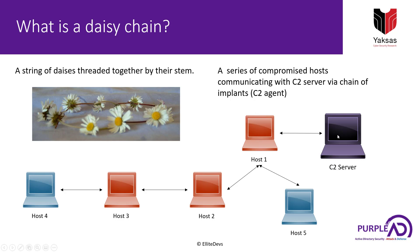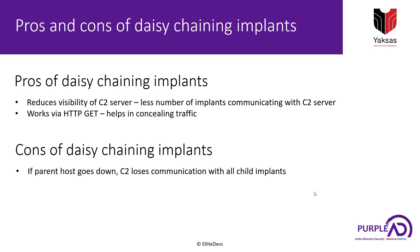The major con of daisy chaining implants is that if the daisy server goes down, the C2 server loses communication with all subsequent hosts in the chain. If host one goes down, the C2 server cannot communicate with host two, three, four, or five. This can be mitigated by using another layer of command and control channels.